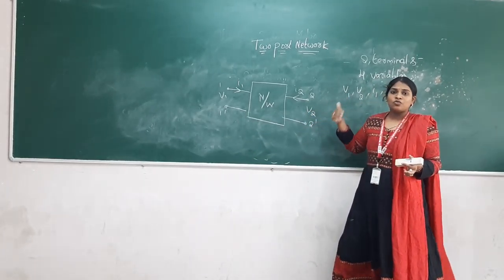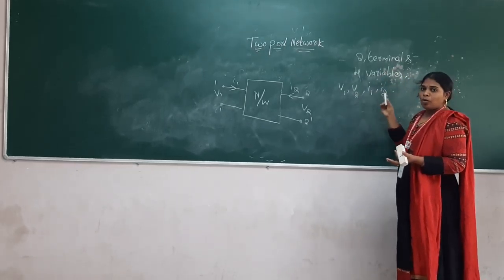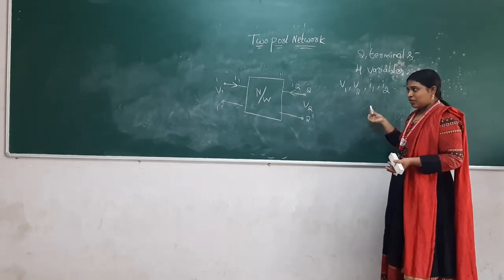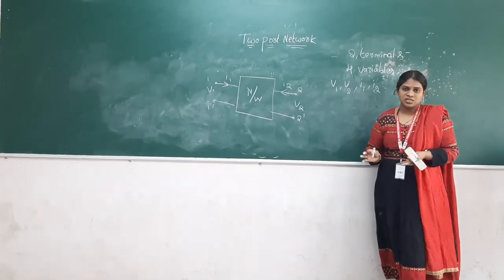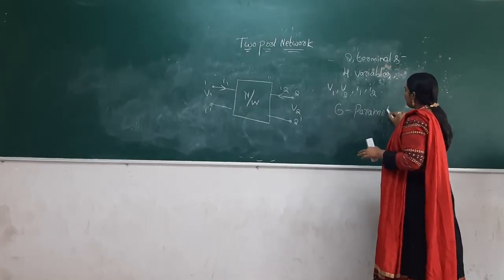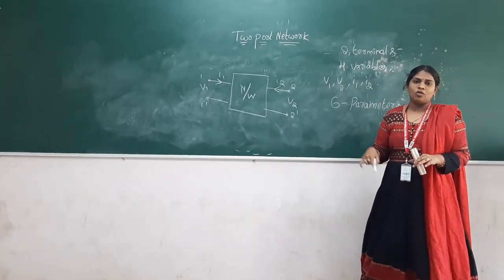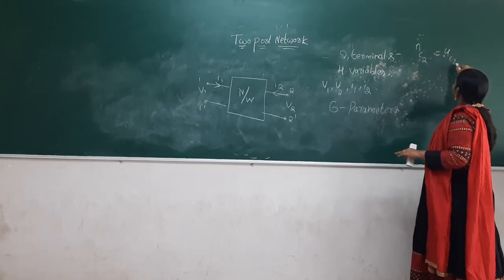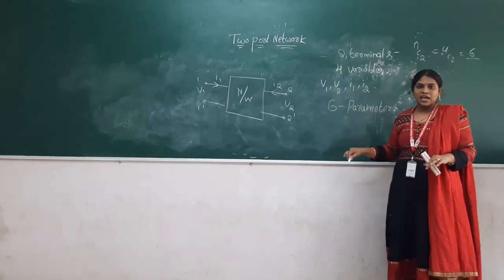Out of four variables, by taking the probability combination — choosing two as known independent variables and the other two as dependent — we get six parameter sets in total. The combination formula C(4,2) gives six. So out of four variables, I get six parameters by considering who is dependent and who is independent.